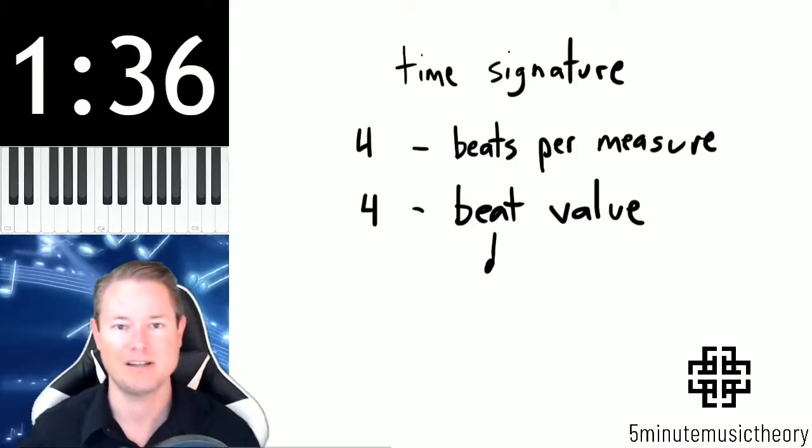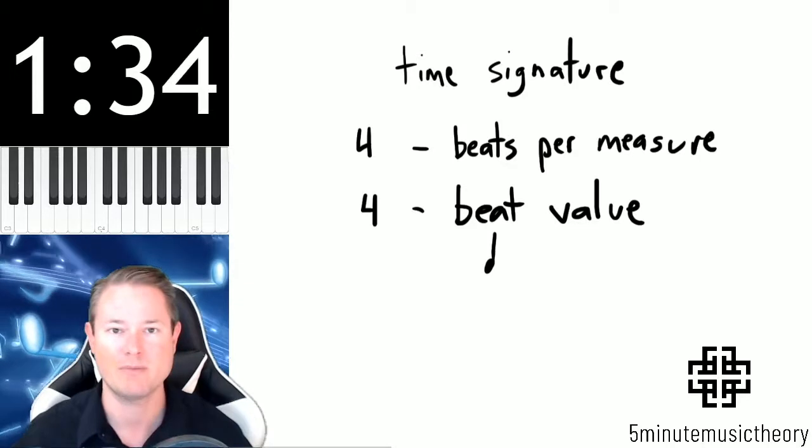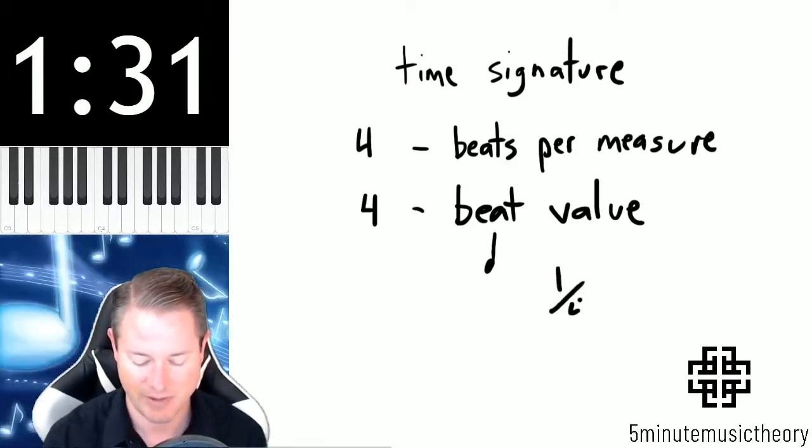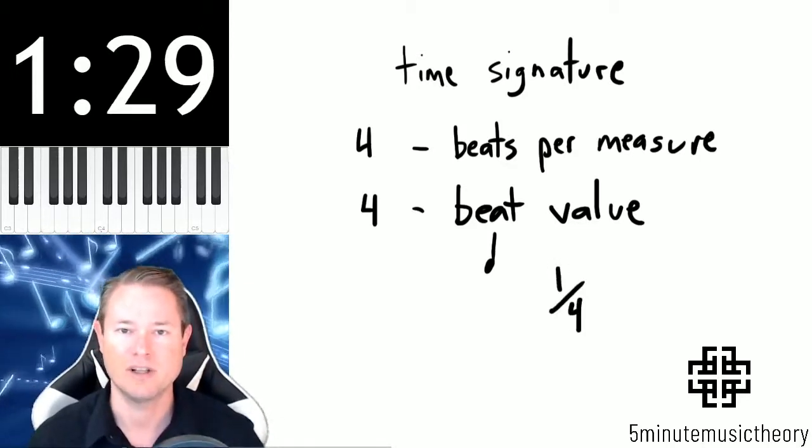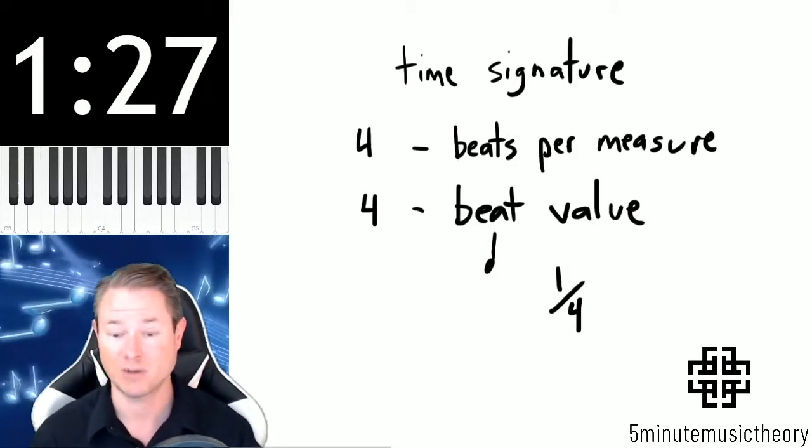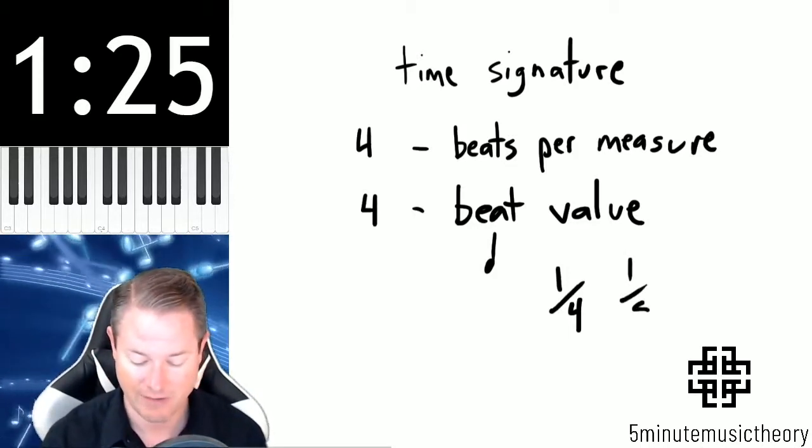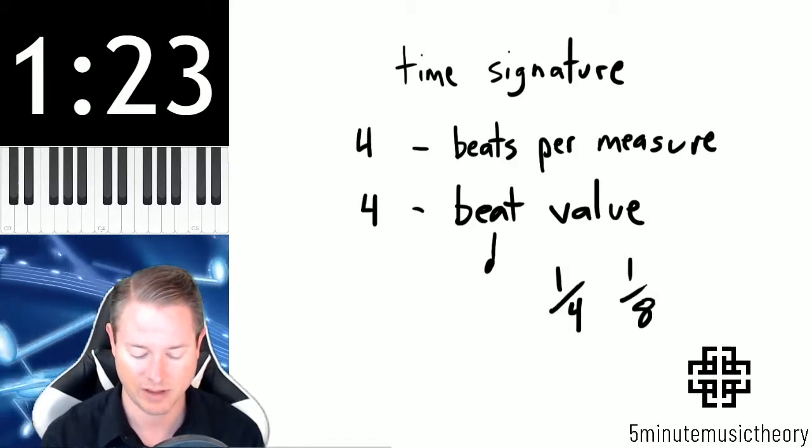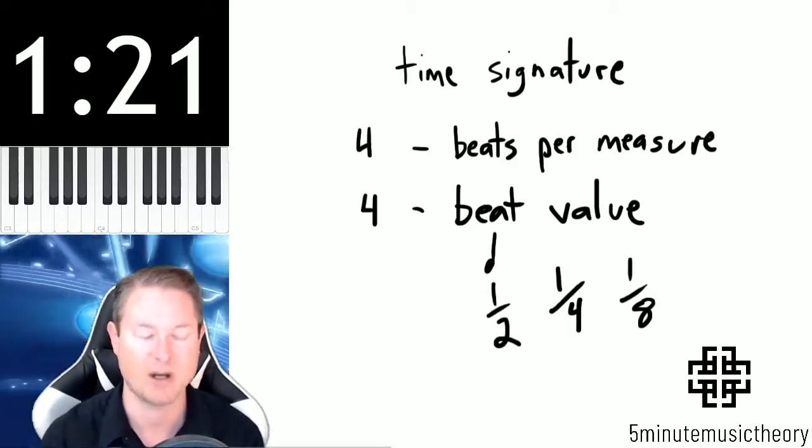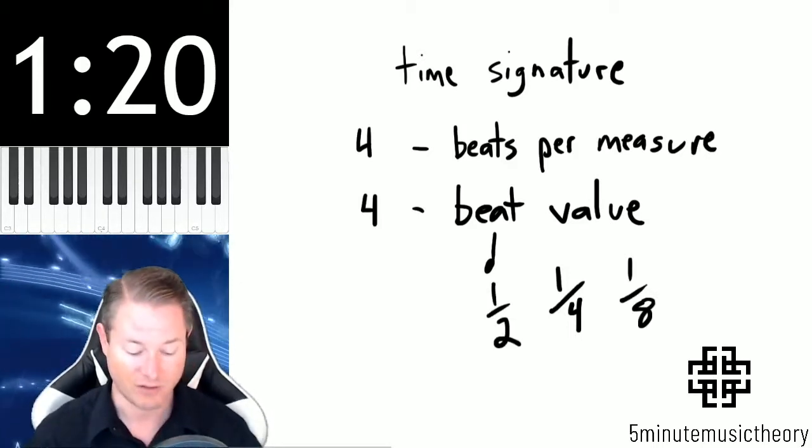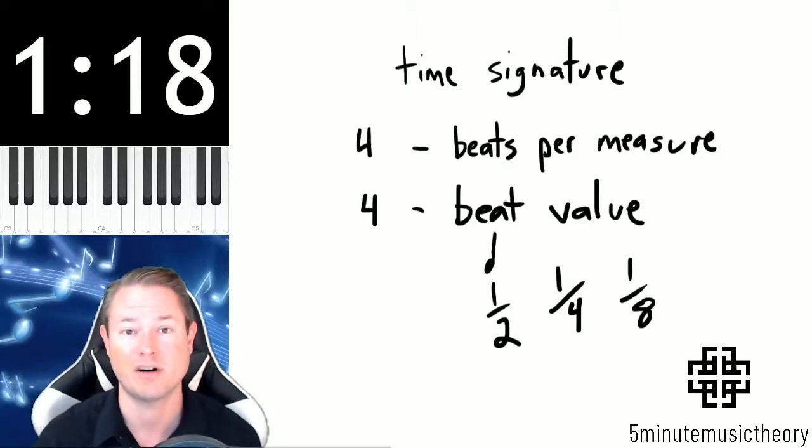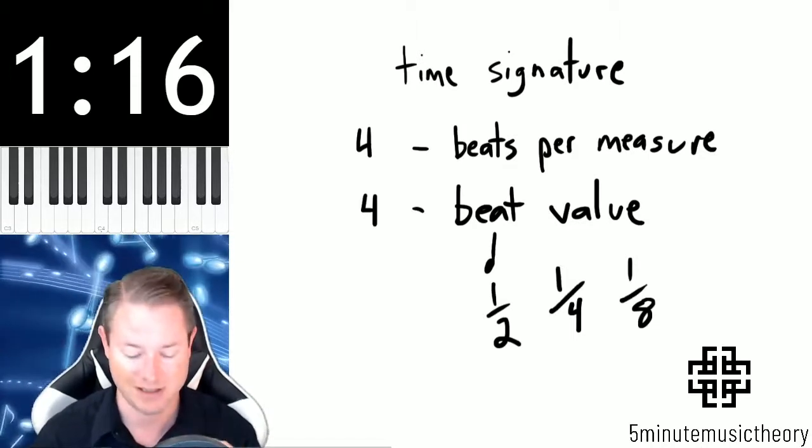The top number is easy because it just tells you how many there are in each measure. But that bottom number, imagine it as a denominator in a fraction. So if we look at a four on the bottom of a fraction, we're looking at quarters. If you have an eight on the bottom, then you're looking at eighth notes. If you have a two on the bottom, you're looking at half notes. So four four specifically means that there are four quarter note beats in each measure.